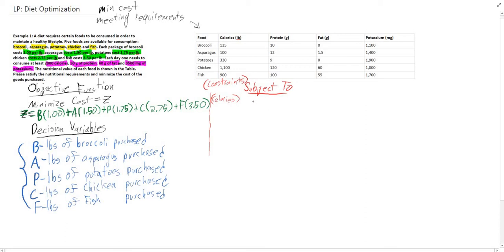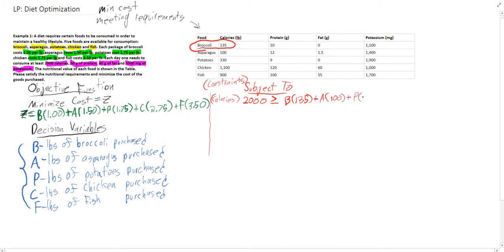The calories constraint is equal to the pounds of broccoli multiplied by the calorie content. Per pound of broccoli we have 135 calories. We need at least 2,000 calories, so this constraint is greater than or equal to 2,000. We add up the calorie contents of all variables: broccoli at 135, plus asparagus at 330, plus chicken times 1,100, plus fish times 900 — taking the pounds of each food and multiplying by the calorie content per pound.